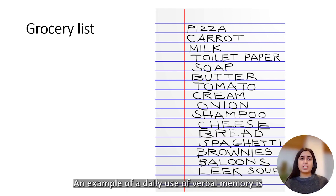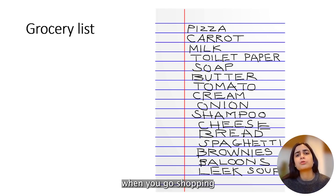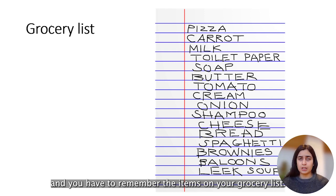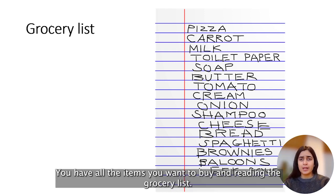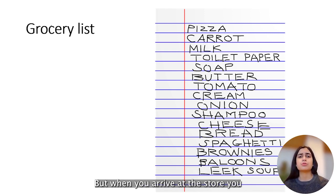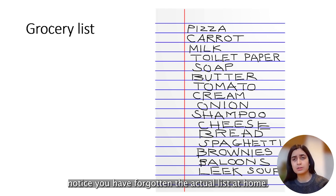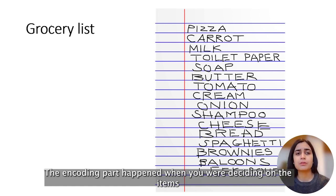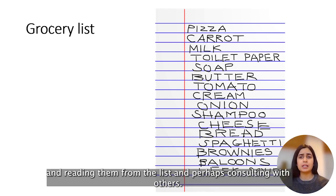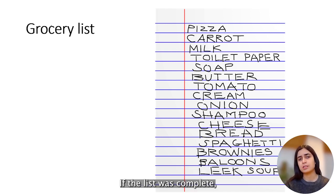An example of a daily use of verbal memory is when you go shopping and have to remember the items on your grocery list. Imagine you're going grocery shopping: you have planned all the items you want to buy and written a grocery list, but when you arrive at the store you notice you have forgotten the list at home. The encoding part happened when you were deciding on the items, writing them down, reading them from the list, and perhaps consulting with others to check if the list was complete.